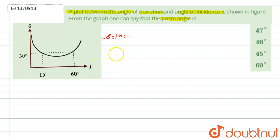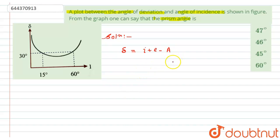We know that for a ray, the angle of deviation is given by the formula: delta equals i plus e minus A, where i is the angle of incidence, e is the angle of emergence, and A is the angle of prism.